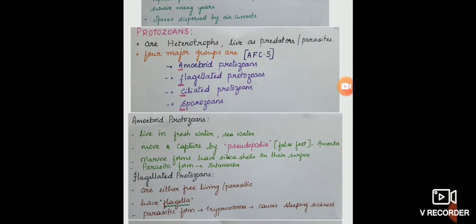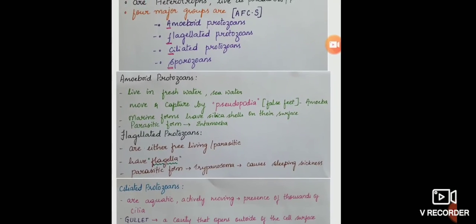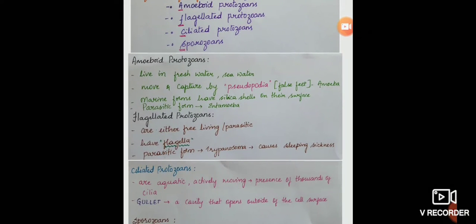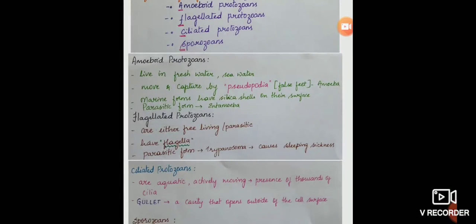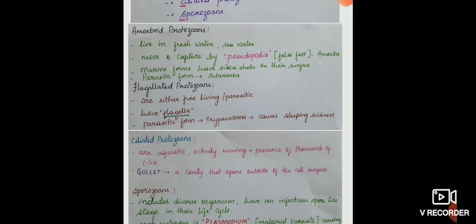Amoeboid protozoans live in freshwater or they may live in seawater as well. The locomotory organs are called pseudopodia or false feet. One such example which possesses pseudopodia is amoeba. Marine forms of amoeboid protozoans have silica shells on their surface. Parasitic form of amoeboid protozoa, one example is Entamoeba which causes dysentery or amoebic dysentery.